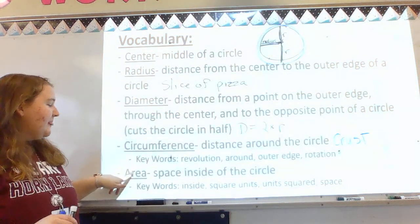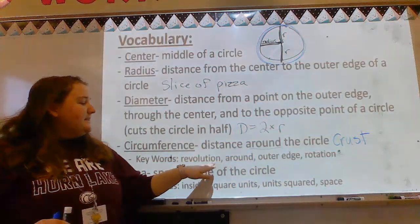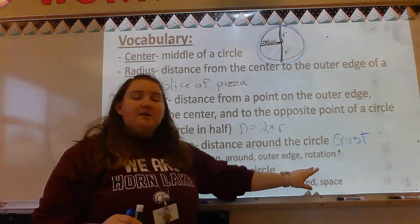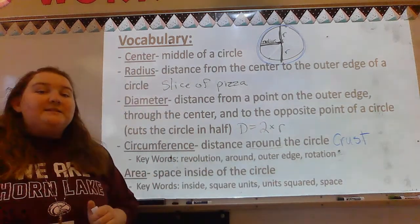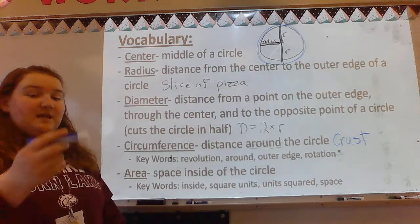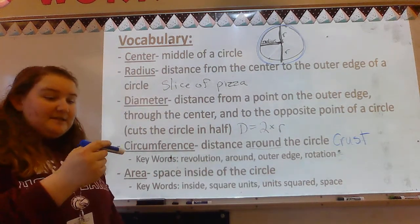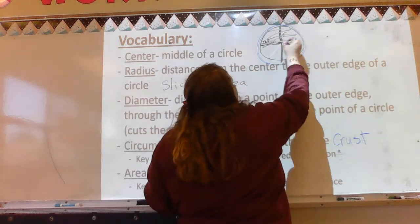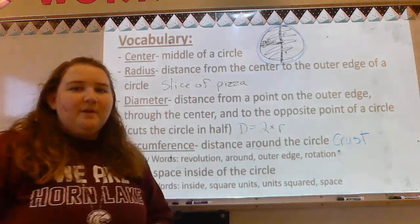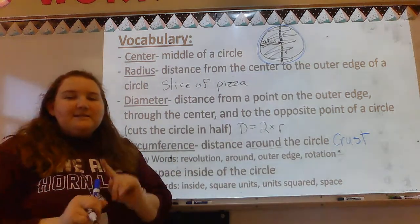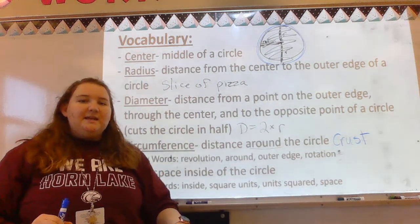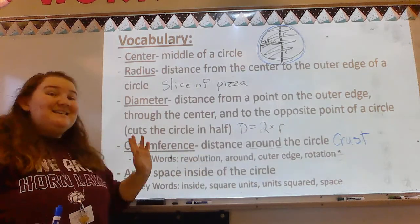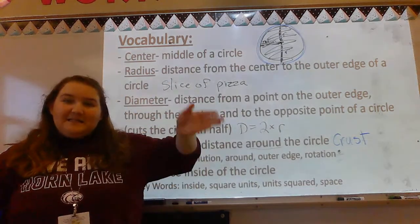Last one: area. Area is the space inside of the circle. Keywords: inside, square units, unit squared, space. If circumference is the crust, then area is all of the goodness inside of the pizza. So radius is a slice, diameter cuts your pizza in half, circumference is the crust, and area is the pizza inside.